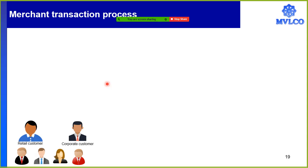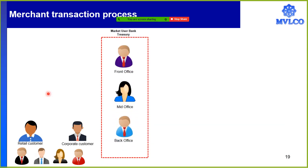Merchant is between the bank and the customer of the bank. At the bank, I would have two types of customers: a retail customer and a corporate customer. A retail customer does not have direct access to the treasury, so when a retail customer does these transactions, he has to do the transaction through the branch.